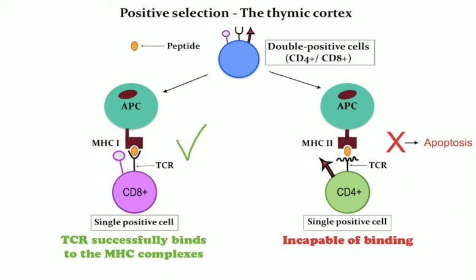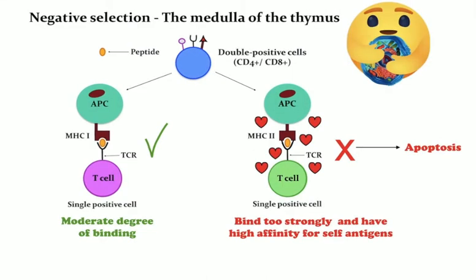Negative selection occurs in the thymic medulla. While the ability of T-cells to recognize antigen-MHC complexes is vital for their ability to fight pathogens and other foreign cells, it is equally important that these T-cells don't recognize and attack our own cells. This is where negative selection comes into play. Developing T-cells in the thymus are presented with peptides bound to MHC molecules, and while a moderate degree of binding leads to survival and positive selection, T-cells that bind too strongly and have high affinity for self-antigens undergo apoptosis.